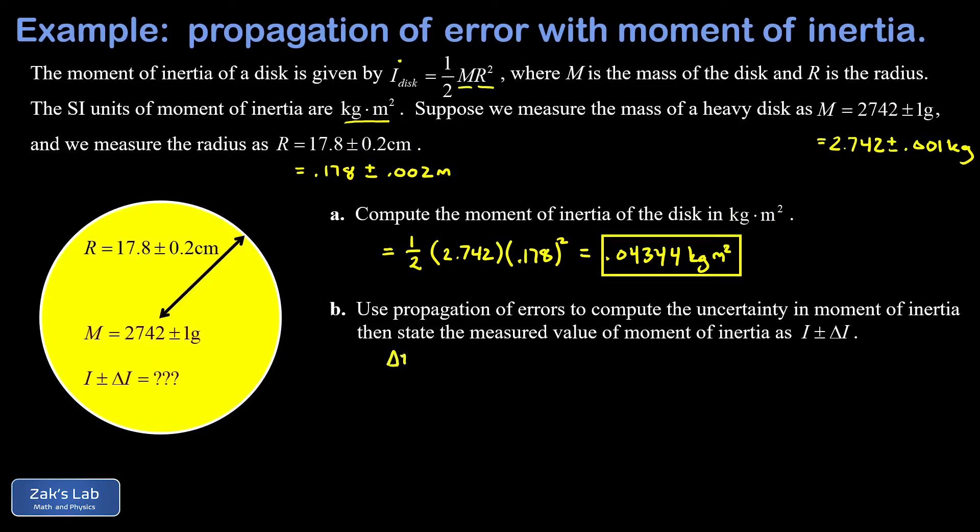Note that there's an extra factor of two in the radius term there—that's because it had an exponent of two in the moment of inertia formula. Now interestingly, we could plug in delta M and M in the original units of grams and we'd still get the right answer.